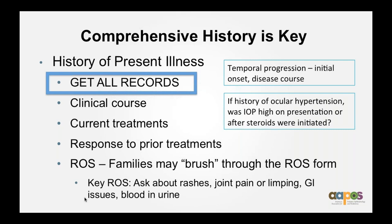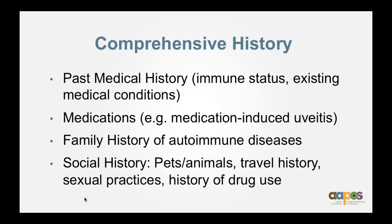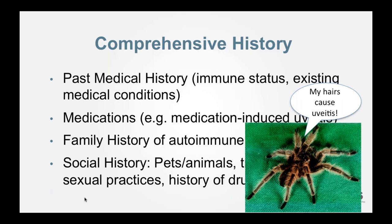An important question: if there's a history of ocular hypertension, was the IOP high on presentation or after steroids were initiated? Sometimes families brush through the review of systems because they think they're at the eye doctor. It's important to reinforce key review of systems when evaluating a patient. Past medical history, especially immune status, is important. Medications can induce uveitis, so keep that in mind. Family history of autoimmune diseases. And for social history, you need to get pretty good detail: pets, animals, travel history, sexual practices, history of drug use.